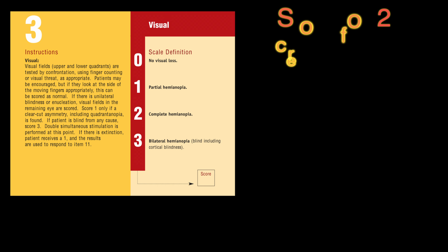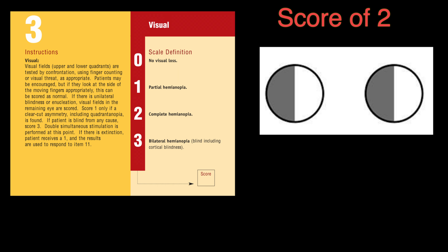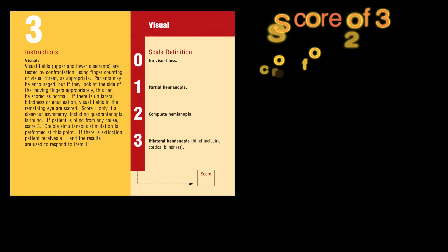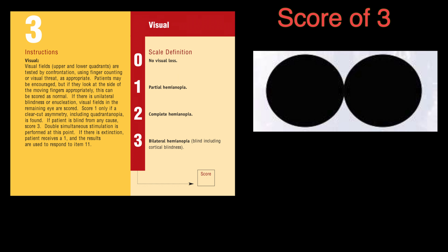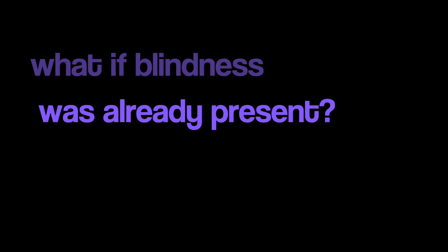A score of 2 is given to an individual who has bilateral hemianopia, meaning that both the upper and the lower portions of the visual field cannot be perceived by the individual. A score of 3 is given to an individual who has complete bilateral hemianopia, meaning they cannot see at all. This can include cortical blindness.